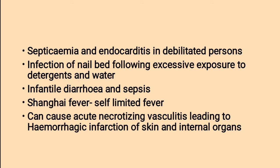Pseudomonas aeruginosa can cause acute necrotizing vasculitis leading to hemorrhagic infarction of skin and internal organs. Acute necrotizing vasculitis is inflammation of blood vessels causing changes in the vessel wall; it can cause vessel walls to thicken and narrow. Hemorrhagic infarction means ischemic infarction where an area of bleeding exists within necrotic tissue.